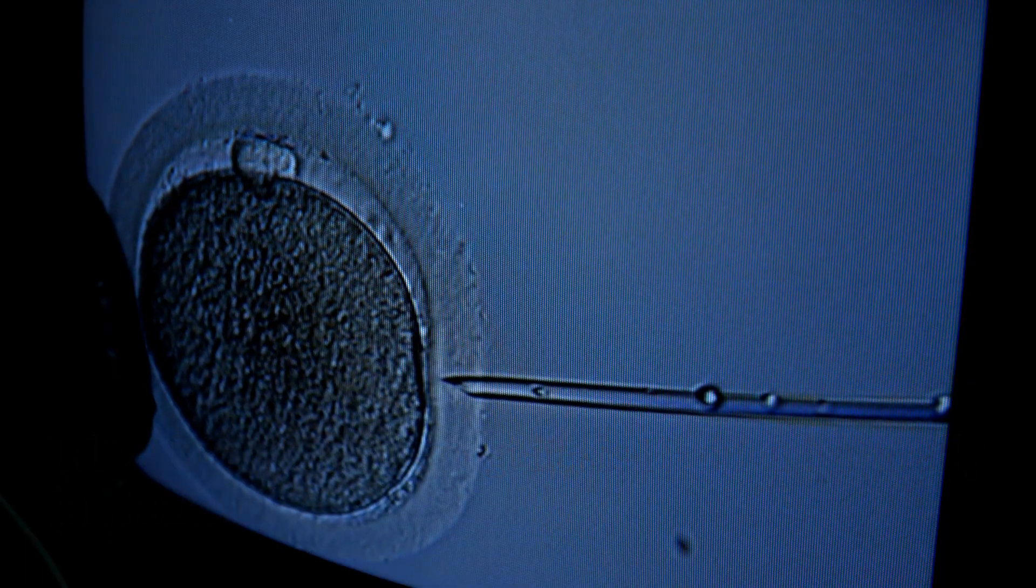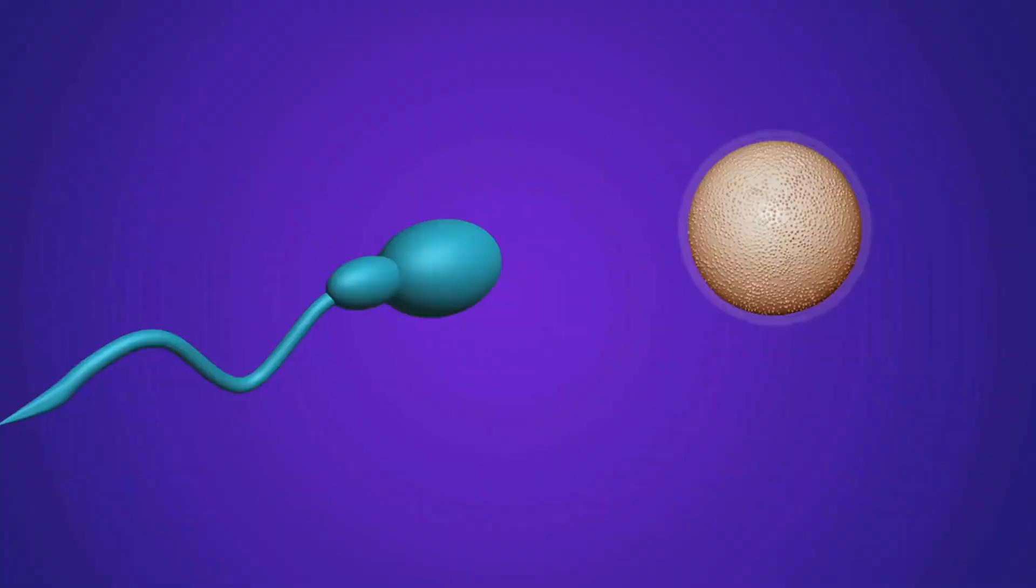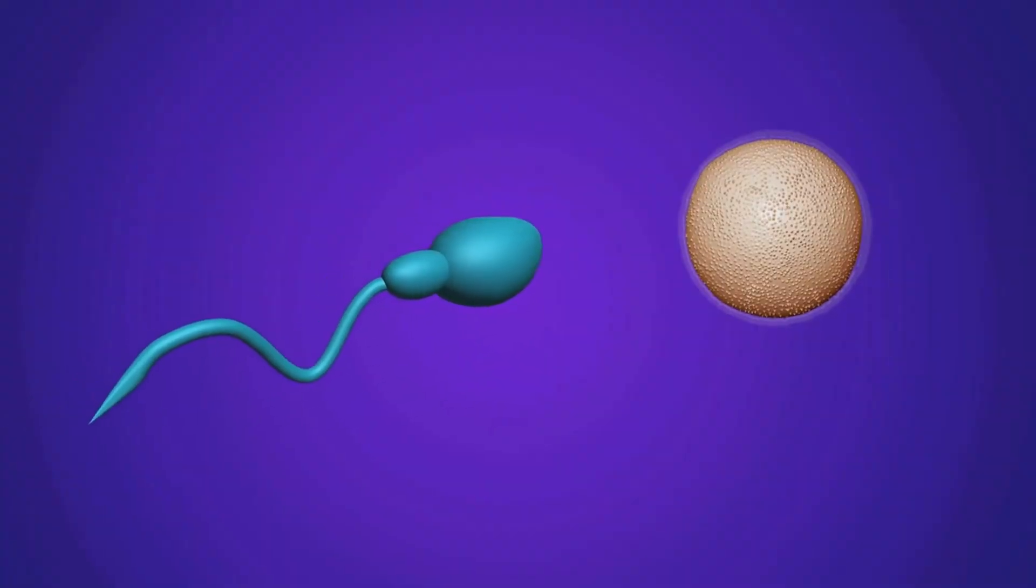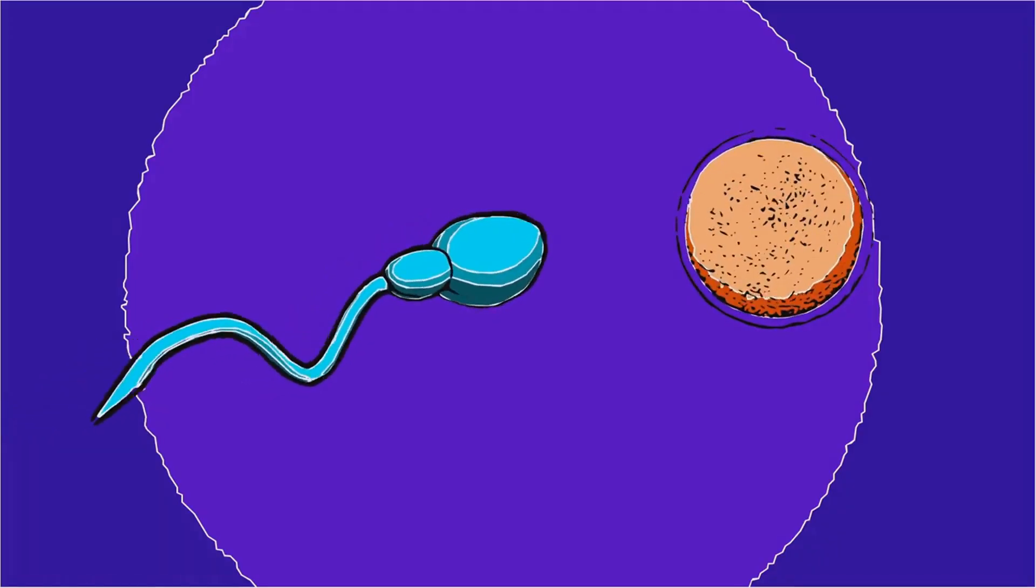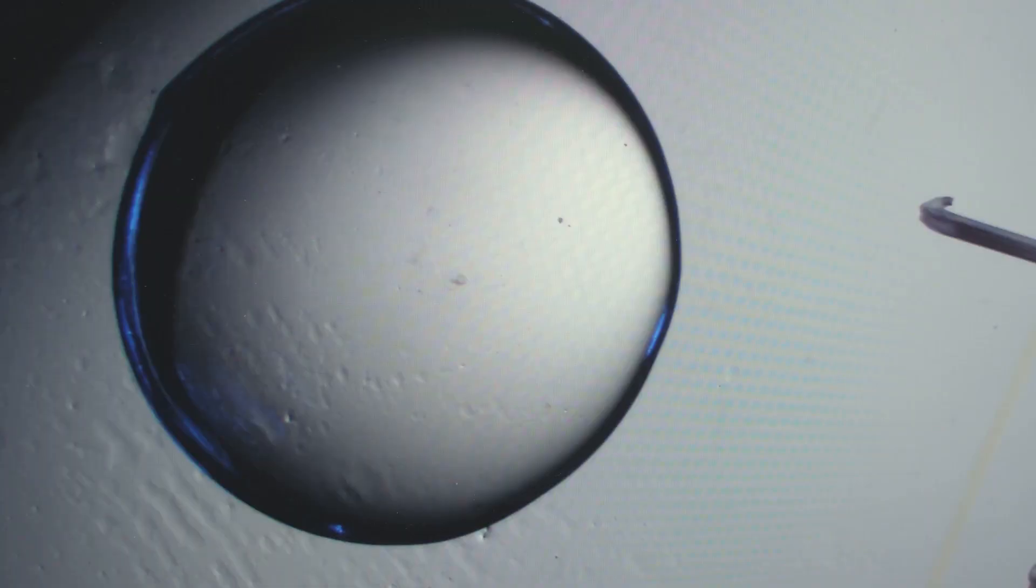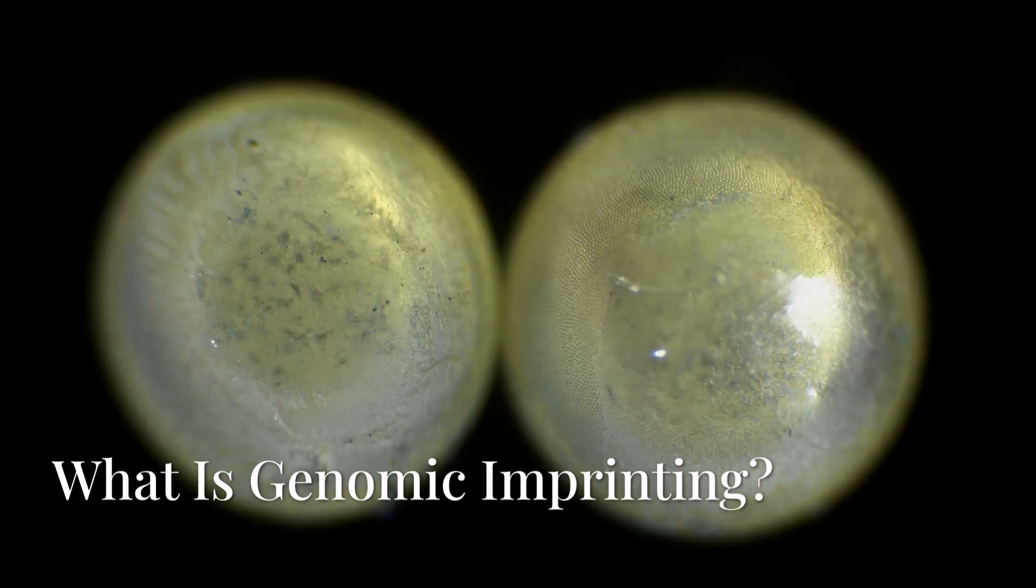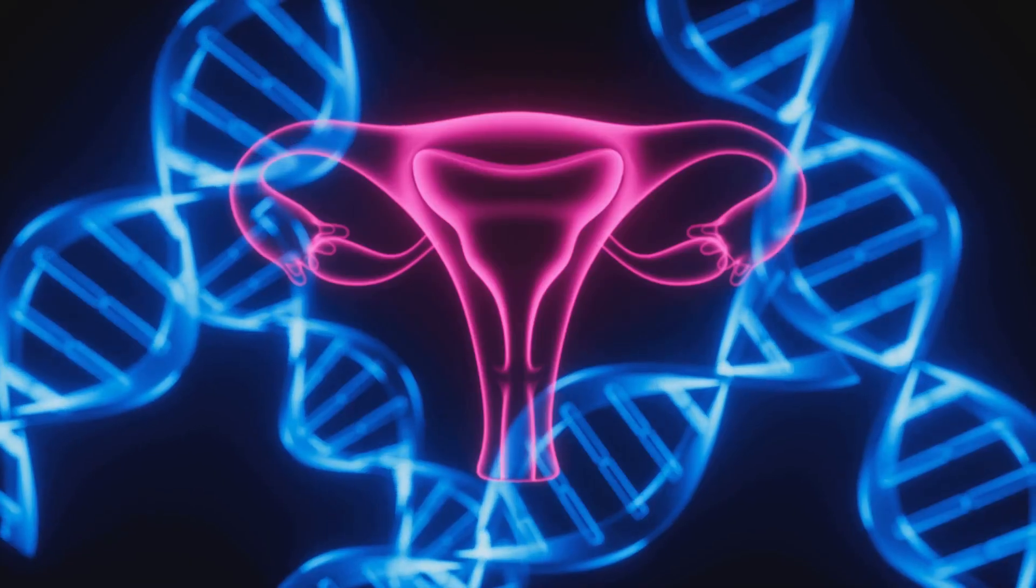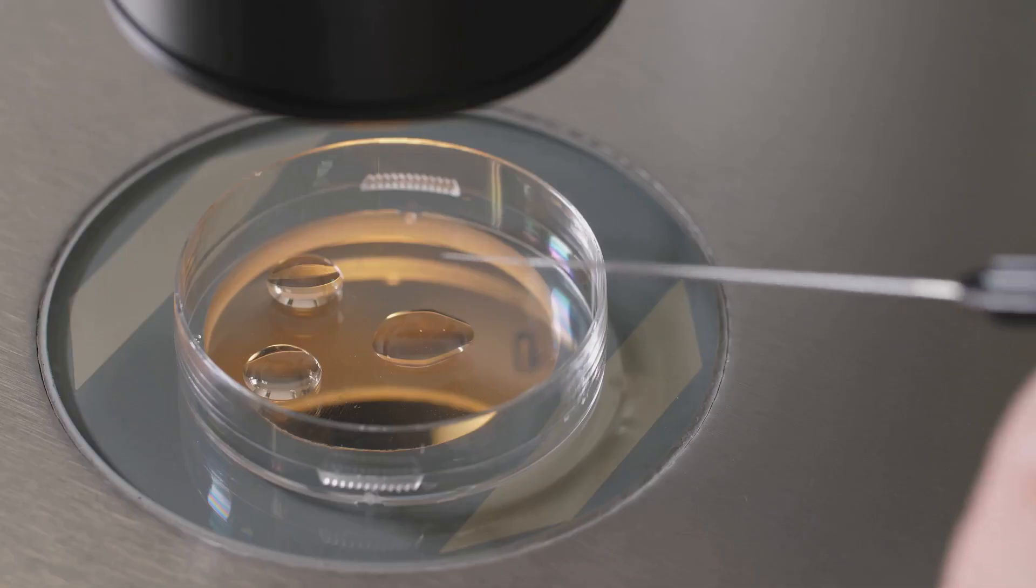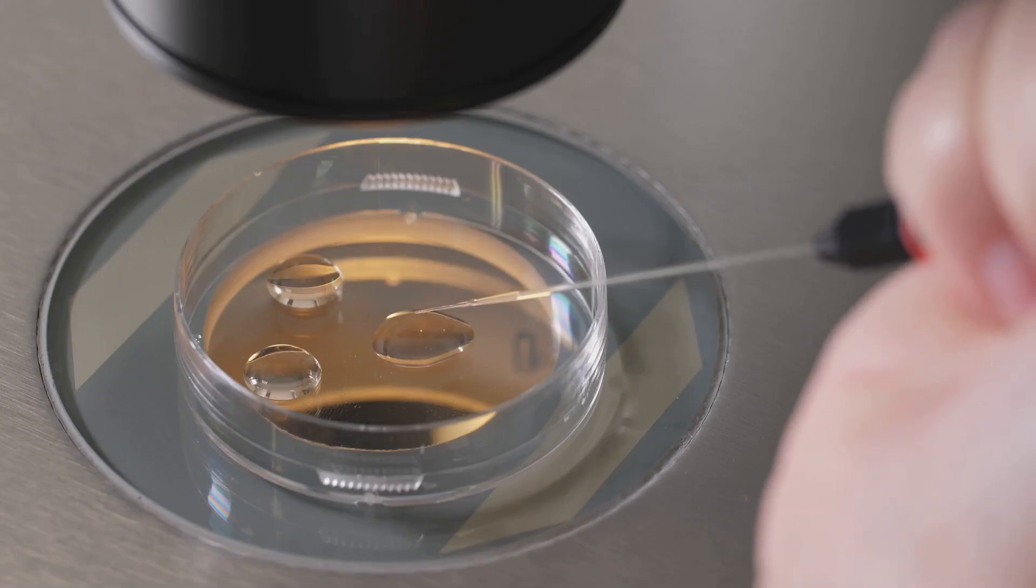Human reproduction normally requires a sperm and egg, each providing 23 chromosomes to make a full set of 46 in the zygote. In parthenogenesis, only the egg contributes DNA. In humans, this results in developmental failure due to genomic imprinting. Some genes are only active if they come from the mother and others only from the father. If all DNA is maternal, the embryo lacks essential paternal gene activity, causing it to fail.